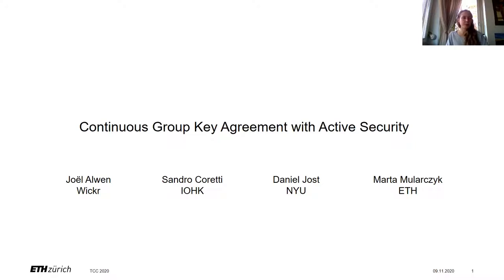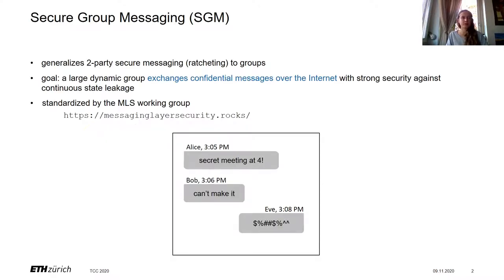To tell you what continuous group key agreement is, I must start with secure group messaging, or SGM, which is the ultimate goal. This basically generalizes the well-known two-party secure messaging — sometimes called ratcheting — to groups. The goal is to enable a large dynamic group of users, think thousands of users, to exchange confidential messages over the internet.